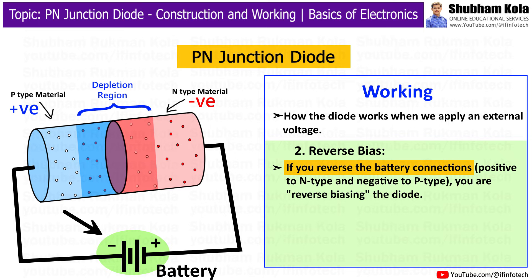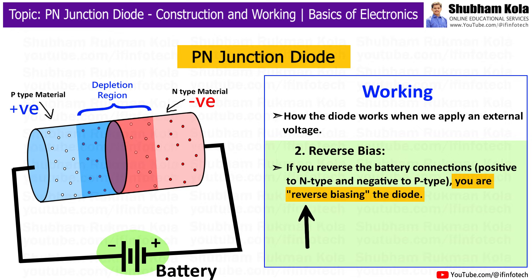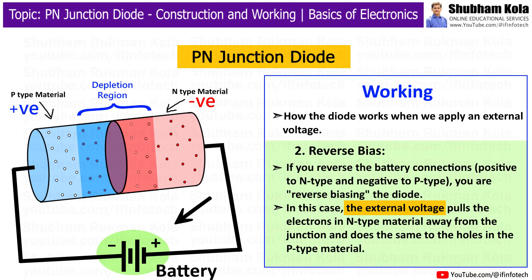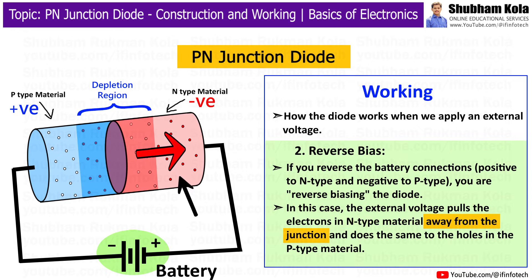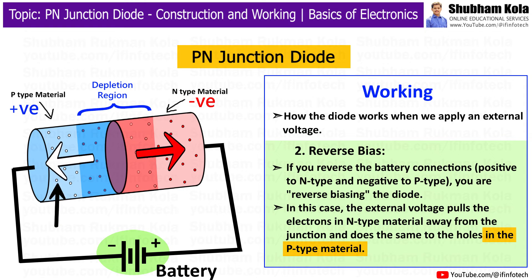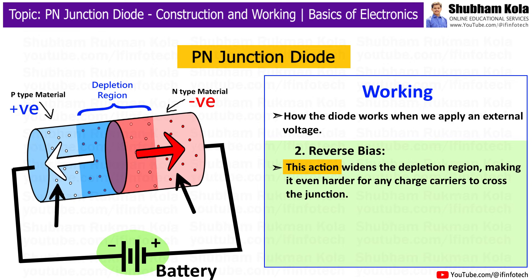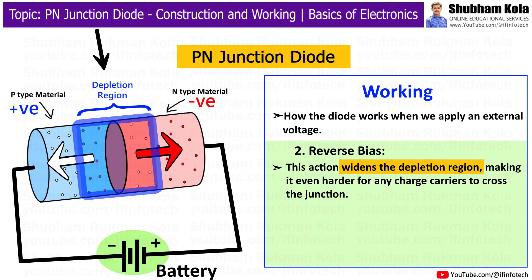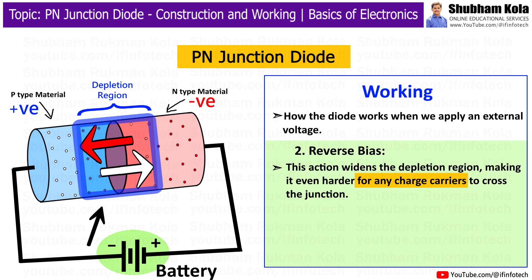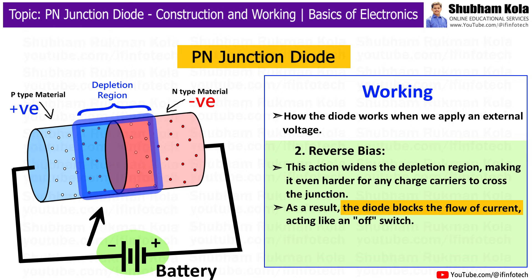If you reverse the battery connection — positive to N-Type and negative to P-Type — you are reverse biasing the diode. In this case, the external voltage pulls the electrons in the N-Type Material away from the junction and does the same to the holes in the P-Type Material. This action widens the depletion region, making it even harder for any charge carriers to cross the junction. As a result, the diode blocks the flow of current, acting like an OFF switch.